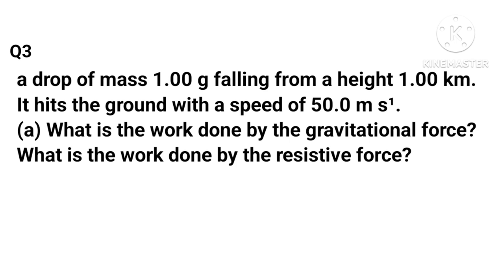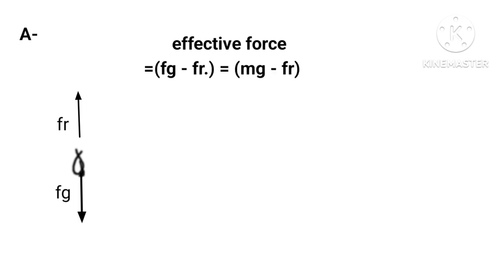When the raindrop is falling down, two forces are acting on the drop: (1) gravitational force Fg, (2) resistive force Fr. As shown in the free body diagram, the effective force on the drop acting vertically downwards equals Fg - Fr = mg - Fr.